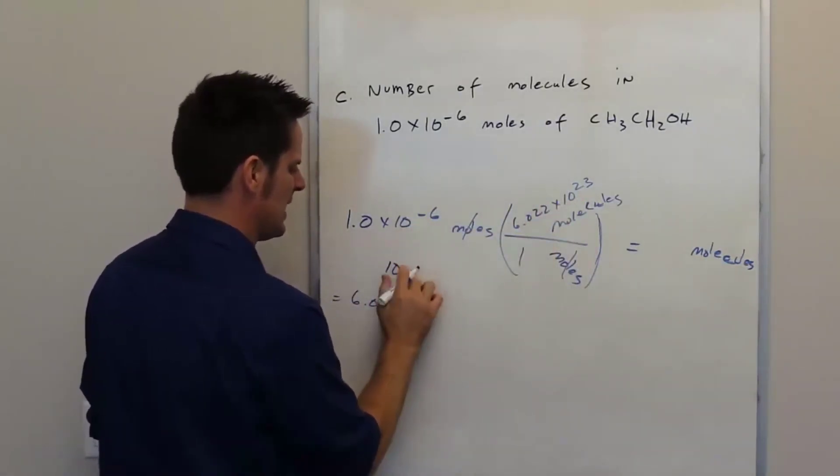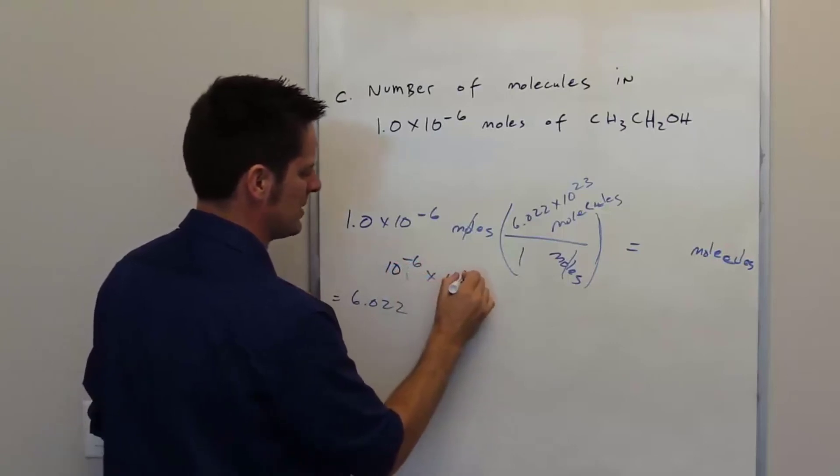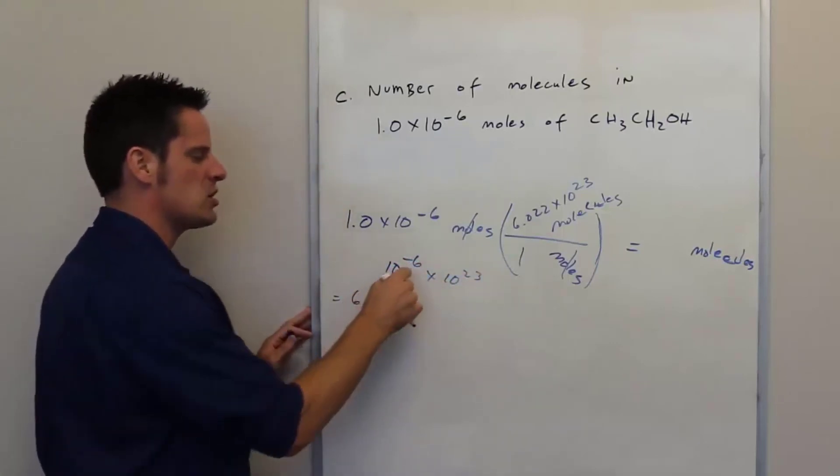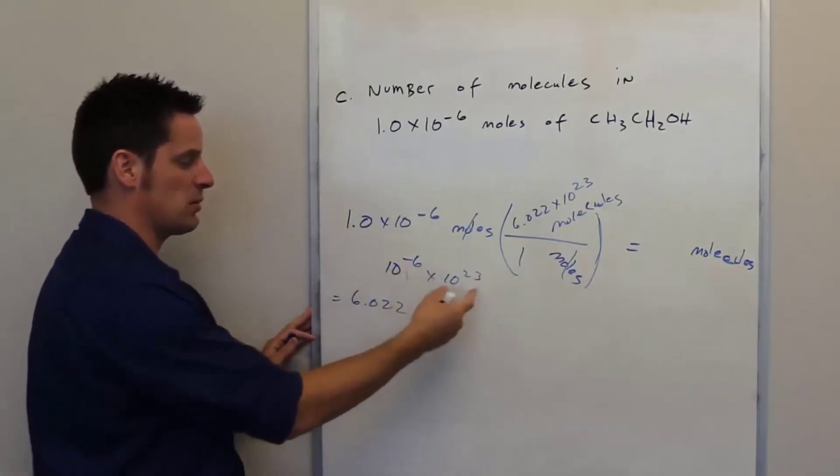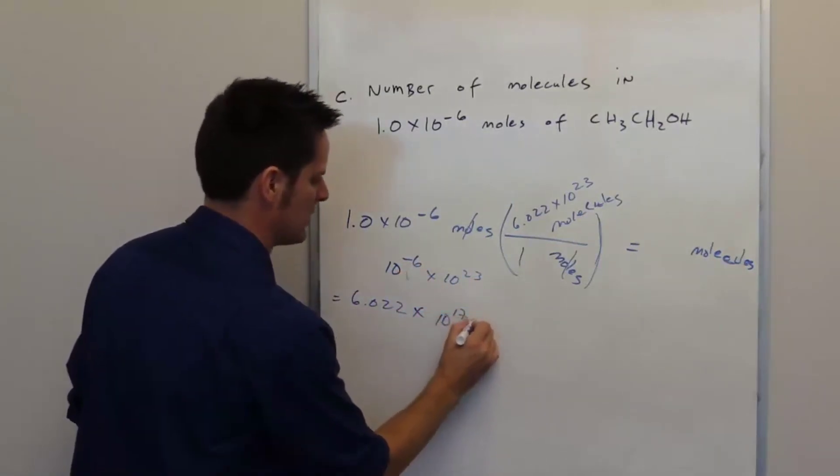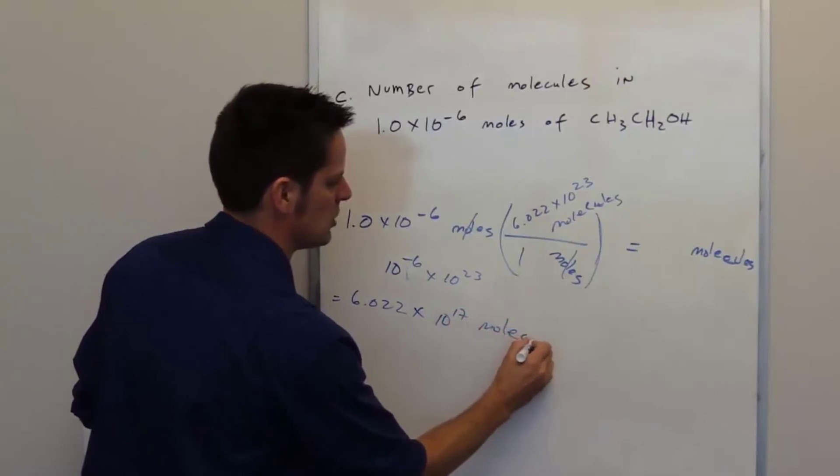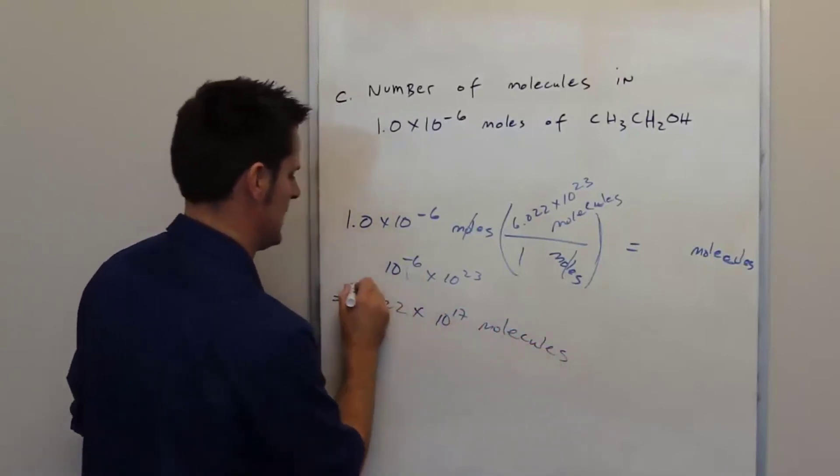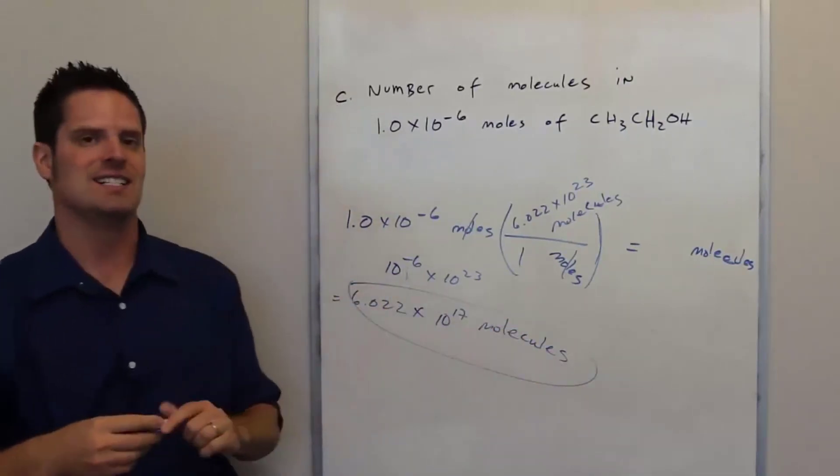If I've got 10 to the negative sixth multiplied by 10 to the 23rd, what do you do? You actually just add these exponents, so 23 plus a negative sixth is equal to 17. So the final answer to this is 6.022 times 10 to the 17 molecules. Yeehaw!